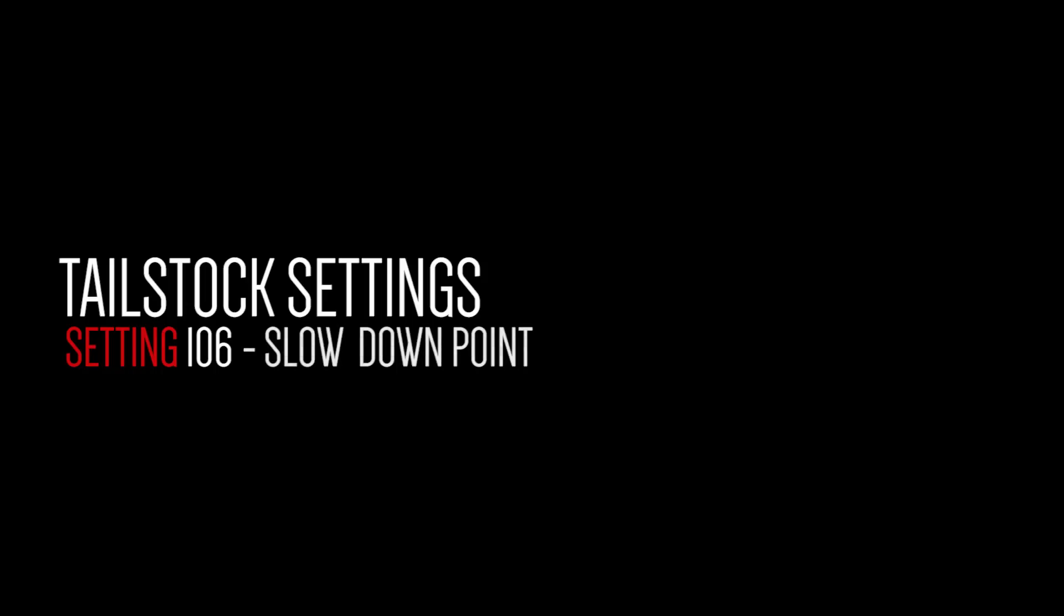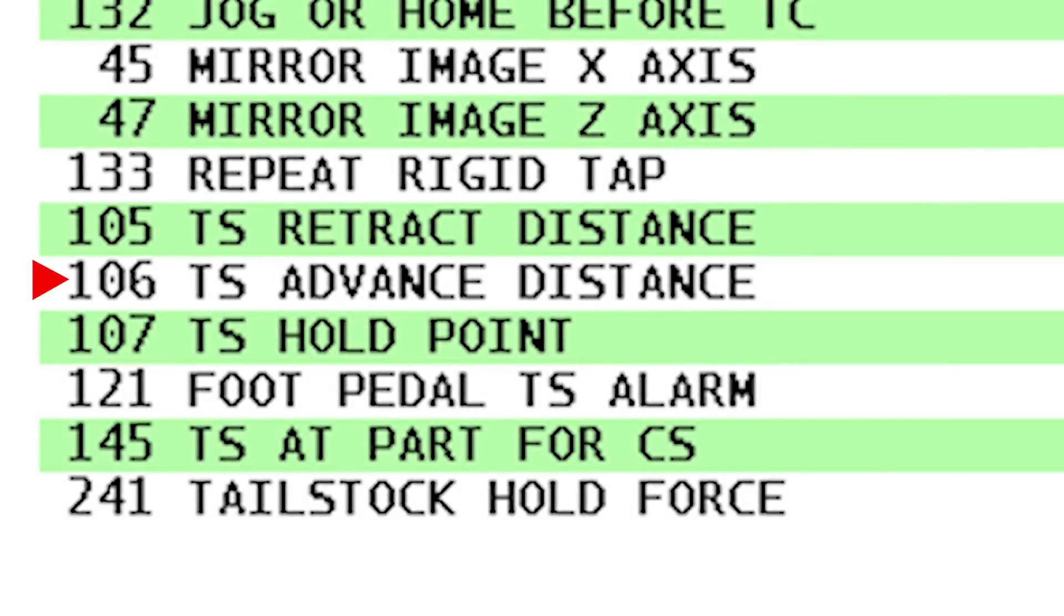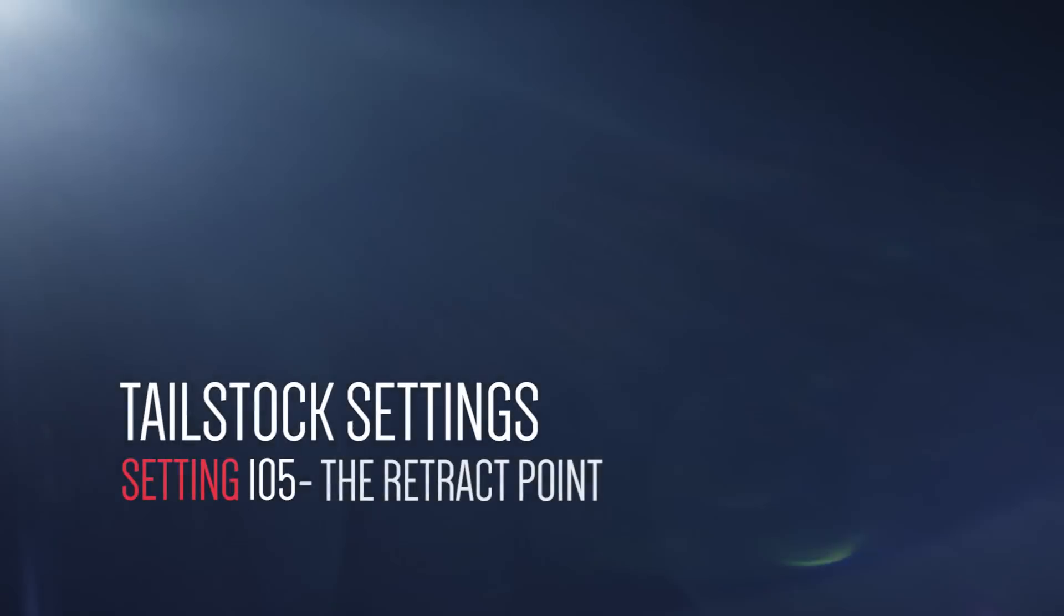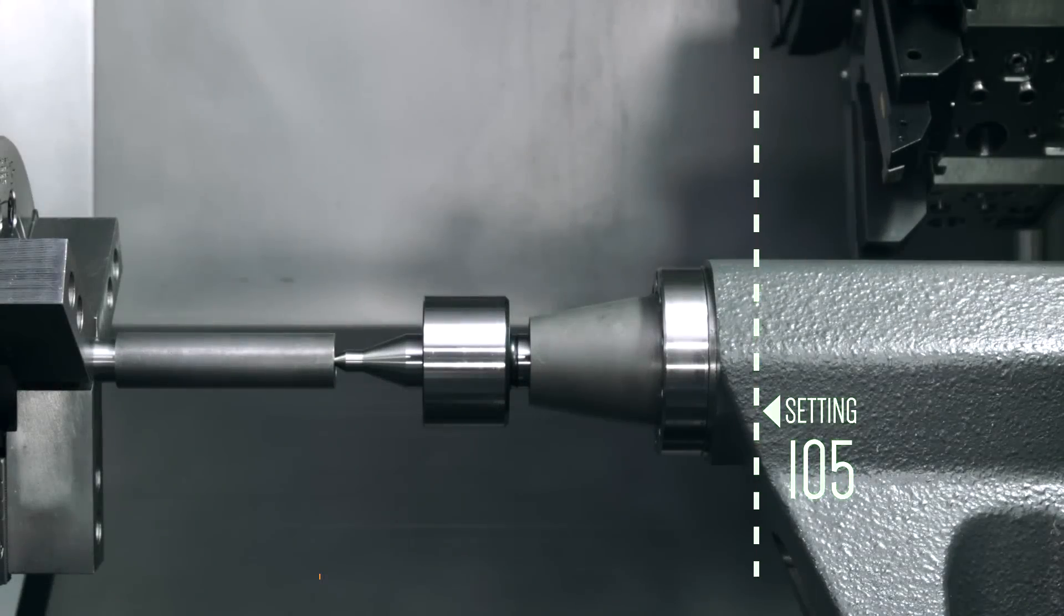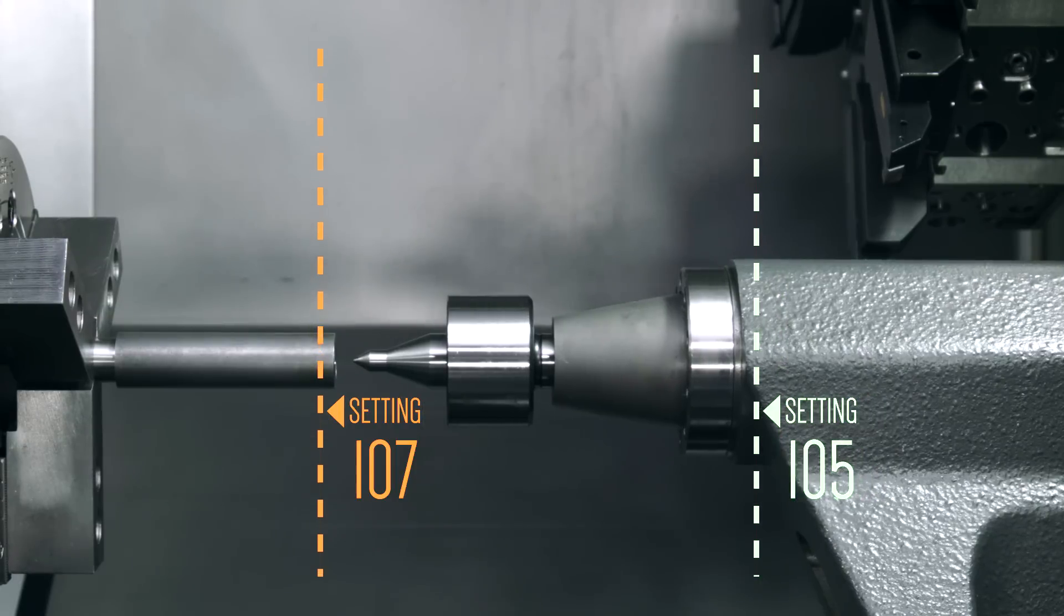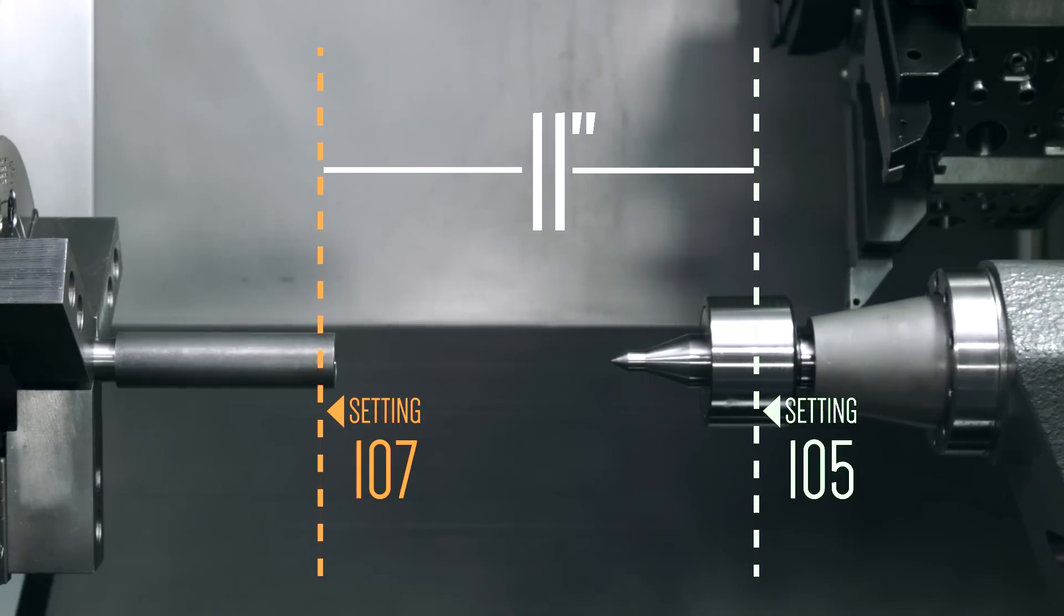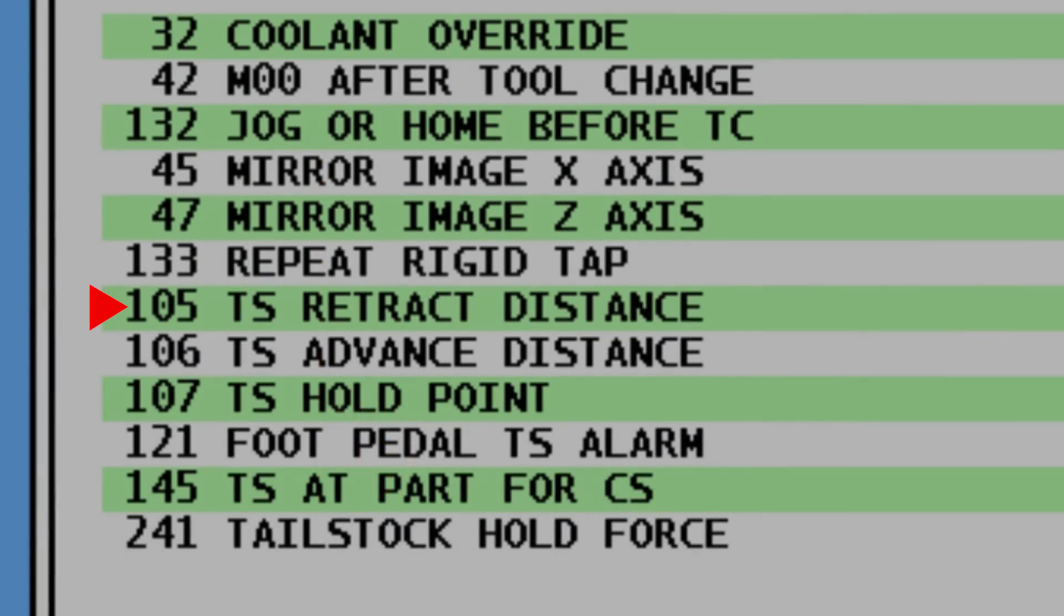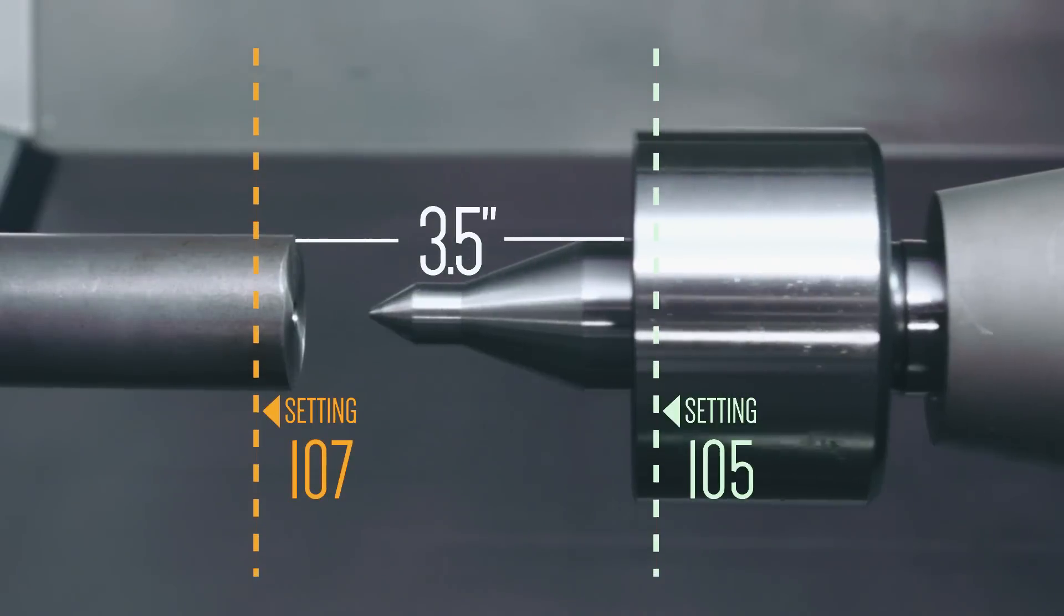How about setting 106? This setting tells the tailstock when to slow down from rapid motion. We'll leave it set at its present setting of 2, which slows motion 2 inches before the hold point. With 107 and 106 out of the way, let's look at setting 105, which sets the retract point. Setting 105 defines how far away the tailstock retracts from the setting 107 value. Right now, setting 105 is set at 11 inches, and our tailstock is wasting a lot of time moving too far away. So we'll pick a new value of 3.5 inches. This keeps it closer when retracted, but it still gives us enough room to remove the part.